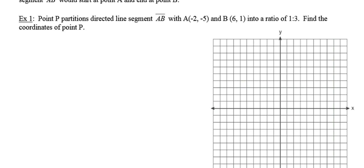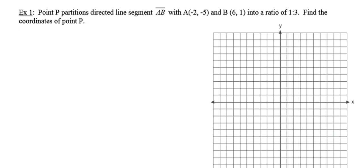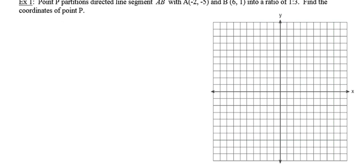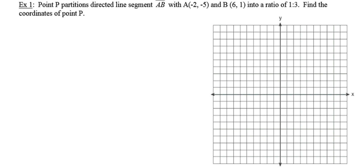Number one says point P partitions directed line segment AB, which has coordinates A at (-2, -5) and B at (6, 1), into a ratio of 1 to 3. They want us to find the coordinates of point P. The first thing I'm going to do is graph these points so I have a visual of what I'm looking at. So there's point A at (-2, -5) and there's point B at (6, 1). I'm going to grab my straight edge and put directed line segment AB on my coordinate axes.